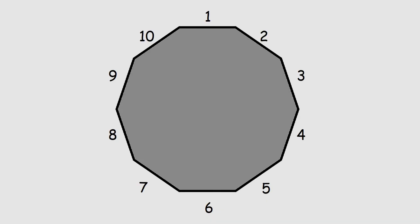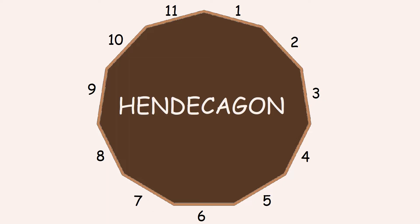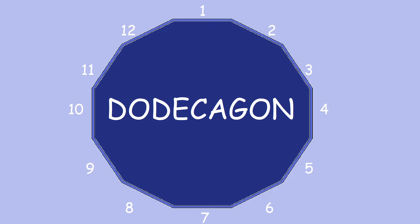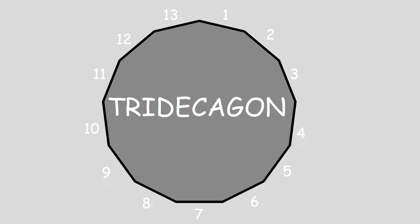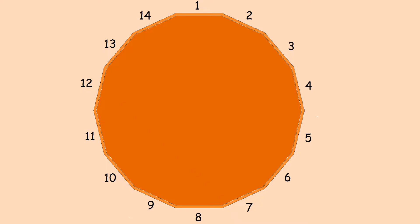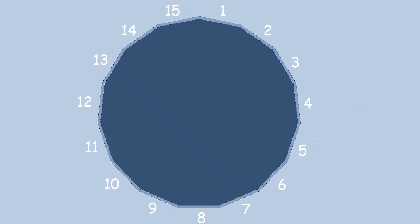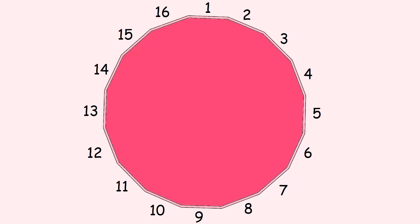What's a ten-sided shape? Decagon! What's an eleven-sided shape? Hendecagon! What's a twelve-sided shape? Dodecagon! What's a thirteen-sided shape? Tridecagon! What's a fourteen-sided shape? Tetradecagon! What's a fifteen-sided shape? Pentadecagon!